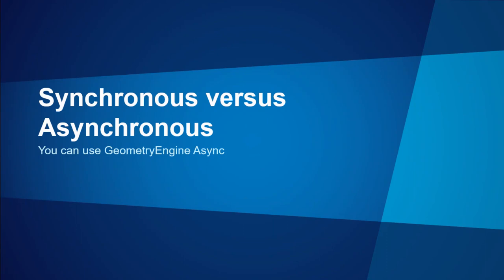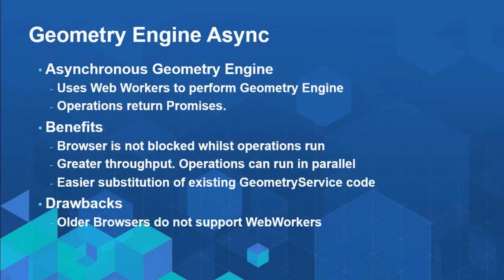So far we've mainly concentrated on the synchronous version of the geometry engine, but there is also an asynchronous version — you get two different modules. The asynchronous geometry engine uses web workers to perform geometry operations. It's slightly different from putting all work into a worker yourself — with the async geometry engine you just call it and those operations are pushed to a web worker. You get a promise back that will eventually resolve with the result. The advantage is that the UI is not blocked whilst you're running it. You can also run many operations in parallel for greater throughput. It's also easy to substitute geometry service code since it's a similar callback-like pattern.